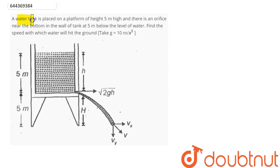The question is: A water tank is placed on a platform of height 5 meters, and there is an orifice near the bottom in the wall of the tank at 5 meters below the level of water. Find the speed with which water will hit the ground.